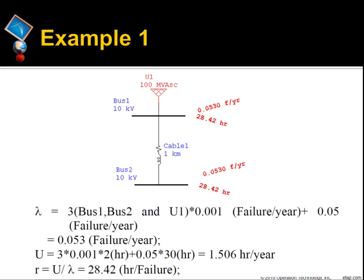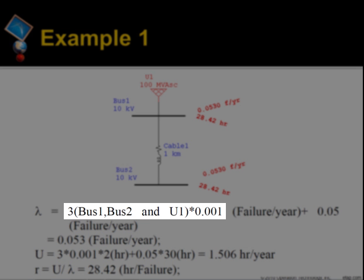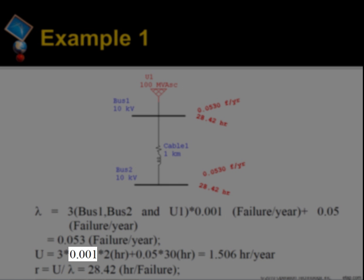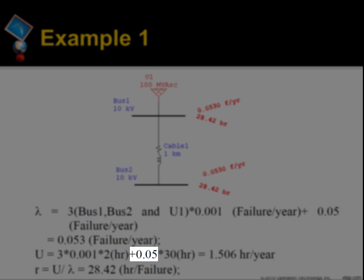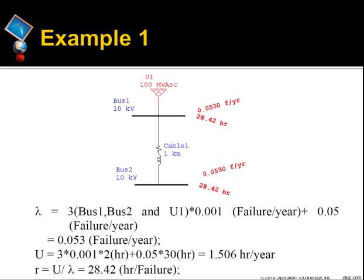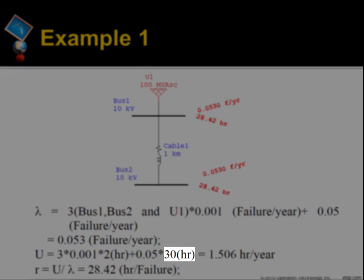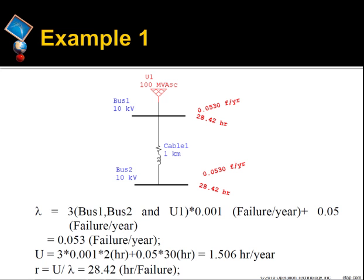Now let's look at a simple radial system example — Example 1. The failure rate for the utility, bus 1, and bus 2 is equal to 0.001, and the MTTR is equal to 2 hours. The failure rate for the cable is equal to 0.05 failures per year per kilometer, and MTTR is 30 hours with length equal to 1 kilometer. You can do a quick hand calculation as shown. As you can see from ETAP calculations, bus 1 and bus 2 have the same reliability indices since there is no protective device to isolate a fault.